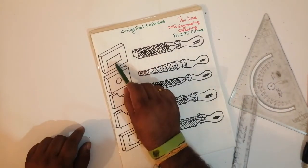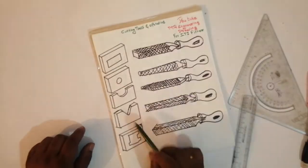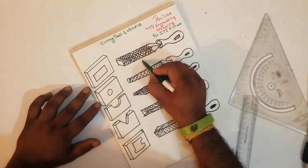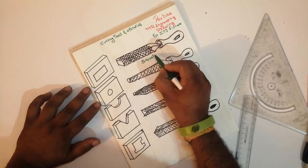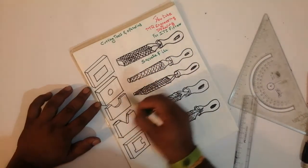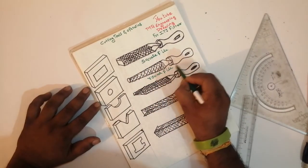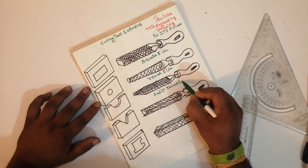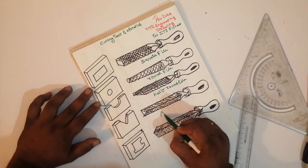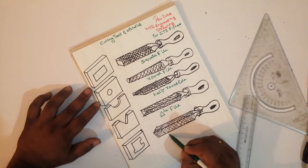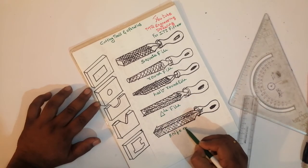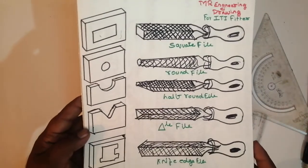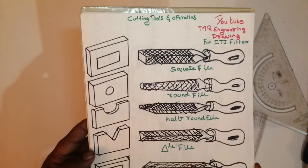The square file will come in this part — whatever file we have to use in the square part. Then the round file for the half-round, this is a triangle, this is a knife edge. This is called a square file, this is called a round file, this is a half-round file, this is a triangle file, this is a knife edge file. These notes will come very neatly. These are mostly used for fitters, for cutting tool purposes and operations.